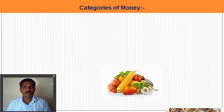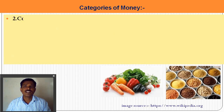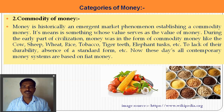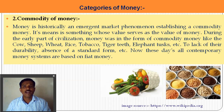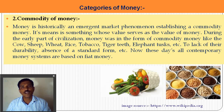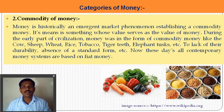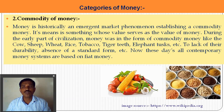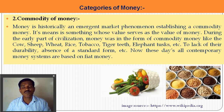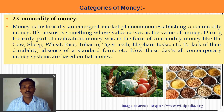The next is commodity money. Looking at the picture, you can see some vegetables, fruits, and food grains — that is what ancient commodity money looked like. Money is a historically imagined market phenomenon that established commodity money, meaning something whose value serves as the value of money. In ancient days, cattle, wheat, rice, tobacco, tiger teeth, and elephant tusks — anything used as a medium of exchange — was called commodity money. Problems with commodity money include lack of durability, absence of a standard measure, and different regions using different commodities. All contemporary money systems are now based on fiat money.